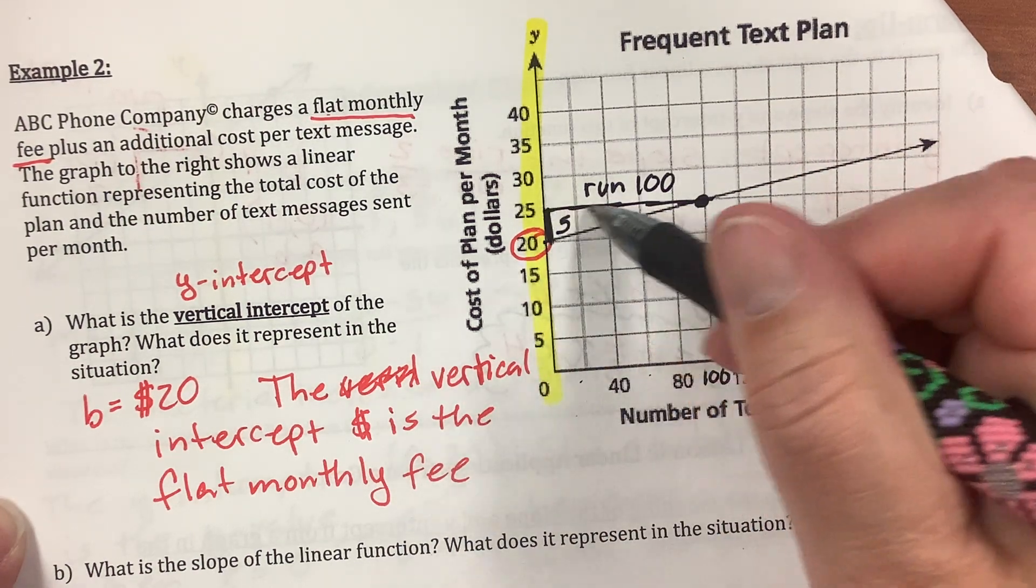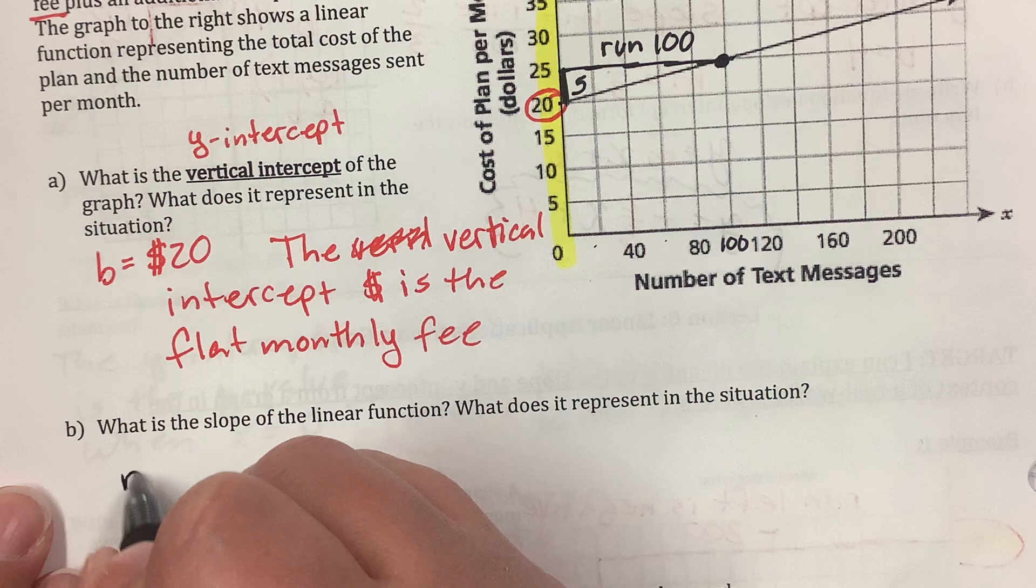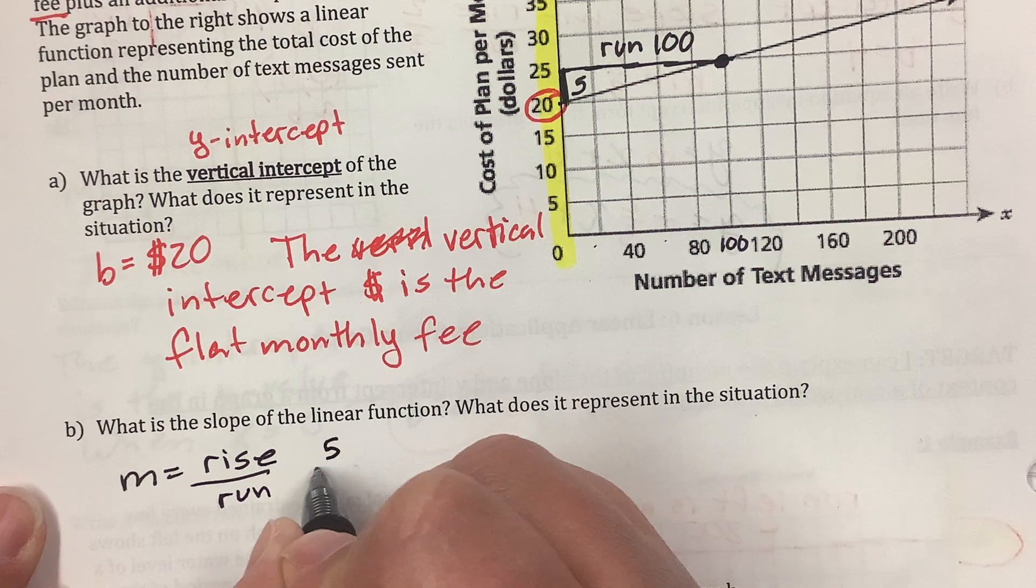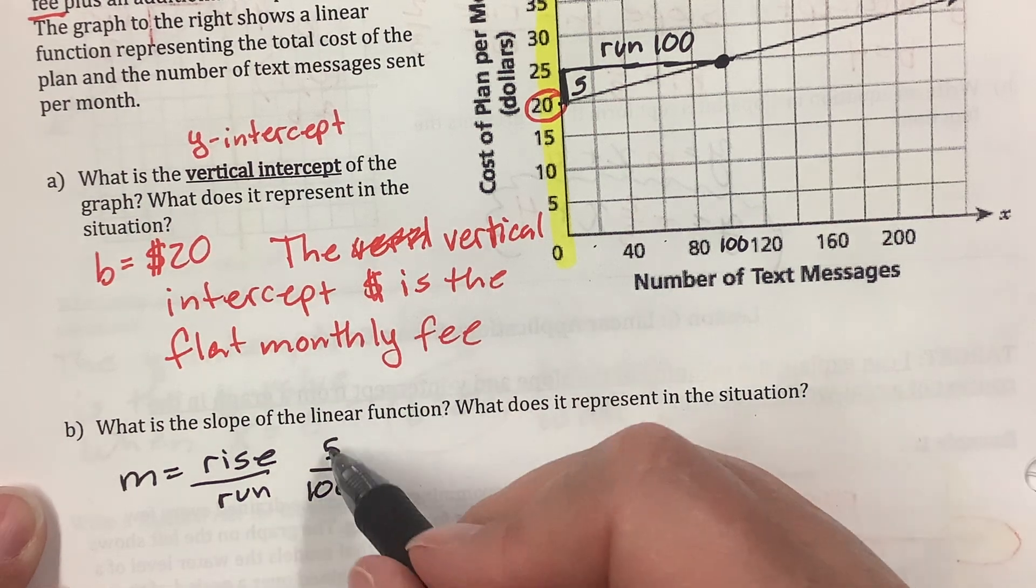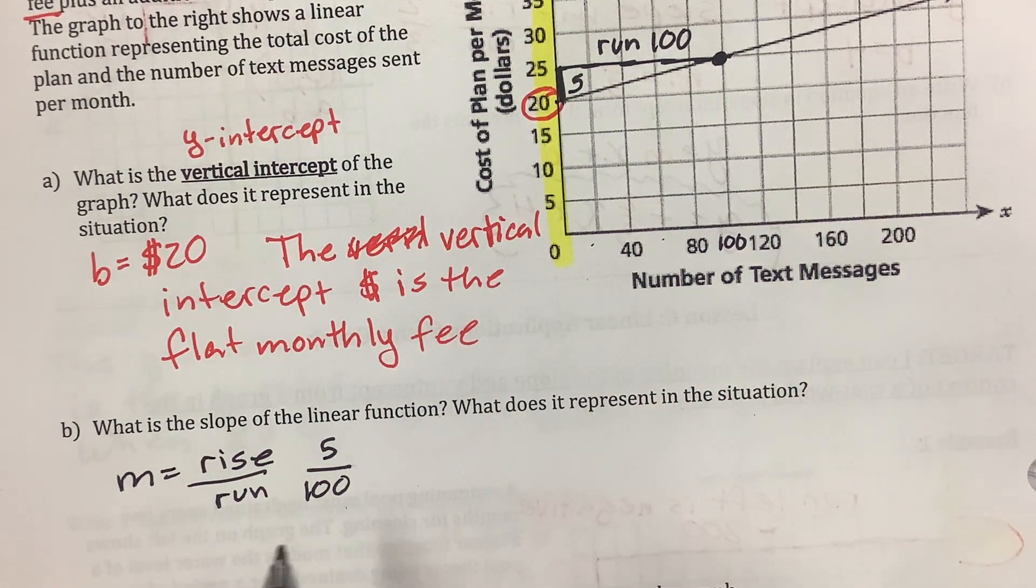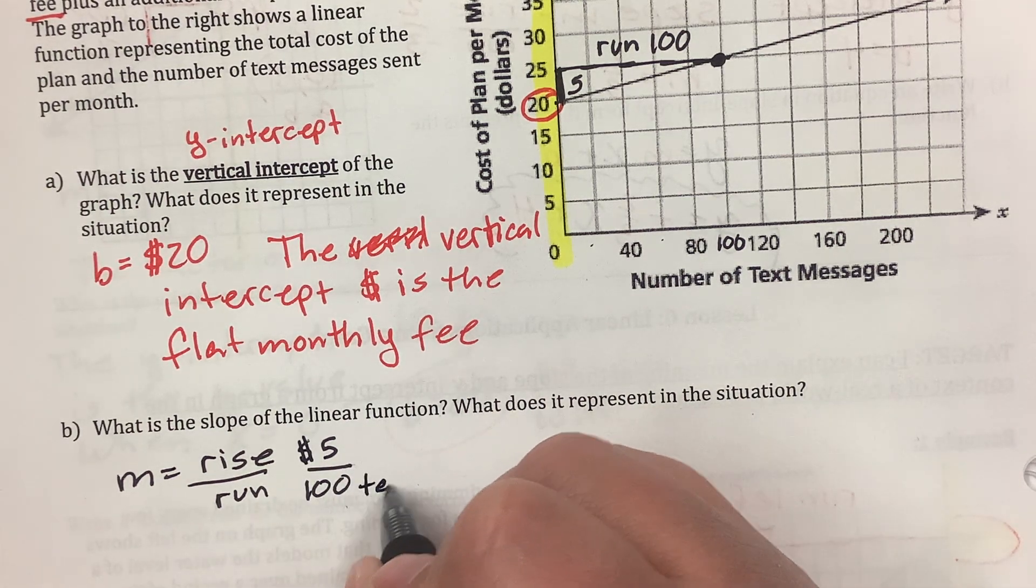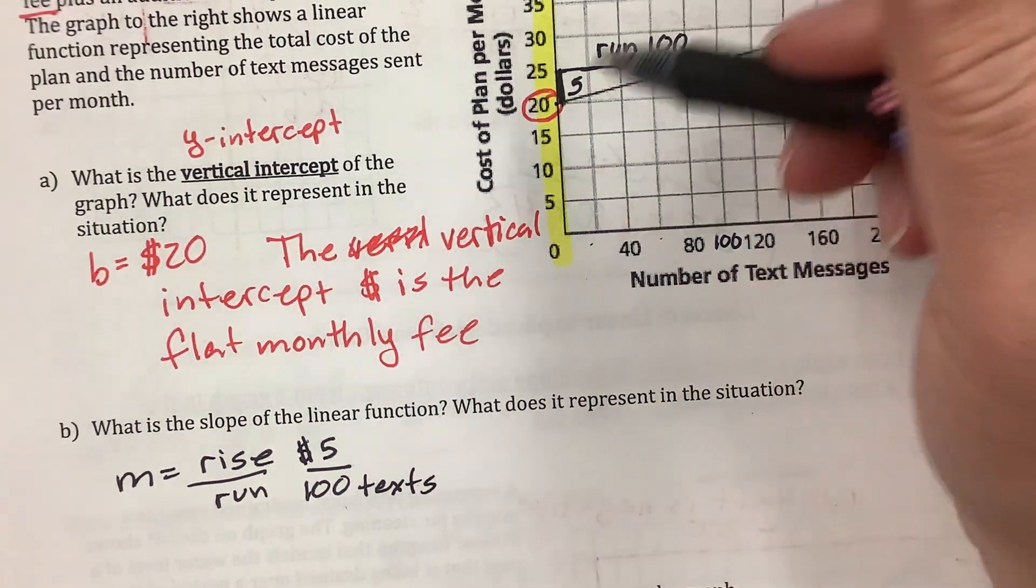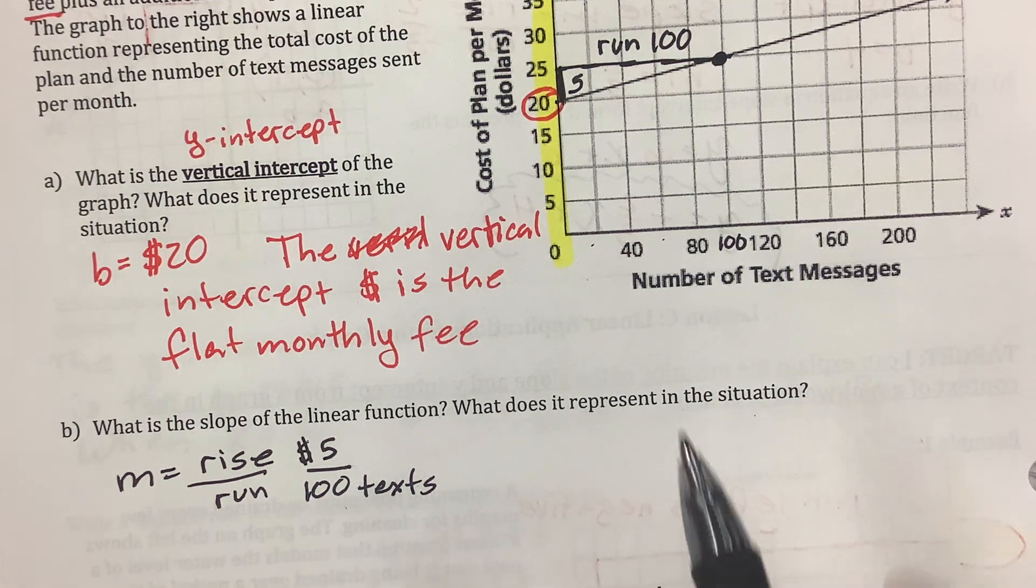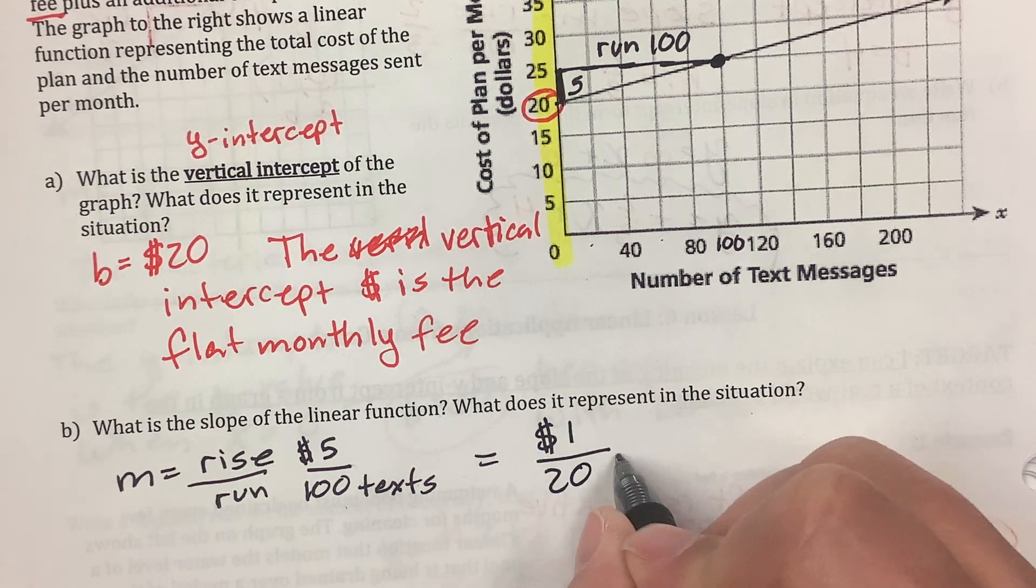So, this is 5 over my run is 100. Now, it's positive because it's going up and it's positive because it's going to the right. So, my slope, m equals rise over run, which is 5 rise over 100 run. 5 what over 100 what? 5 dollars per 100 text messages. Because I'm reading it right off of here. Well, I could reduce it. I'm going to reduce that. That's 1 dollar for 20 texts.